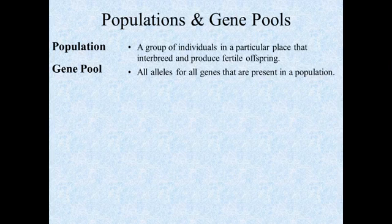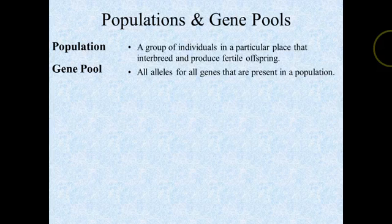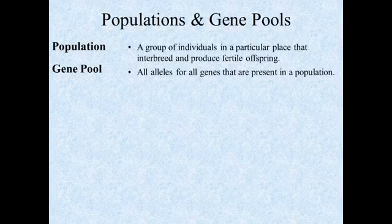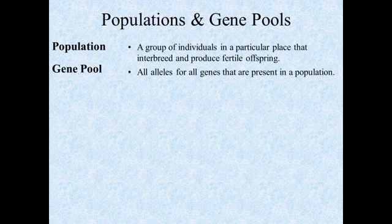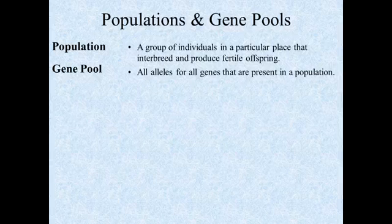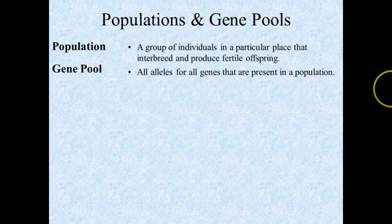That brings us to the idea of a gene pool. A gene pool describes all alleles for all genes that are present in a population — everything from eye color to hair color to all the alleles that form all of our proteins. This can vary from population to population. For example, the alleles that result in blue eyes would be expected to be somewhat more common in Norway than in China. The gene pool varies from population to population.